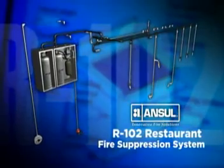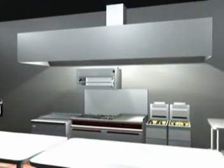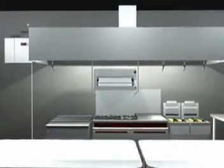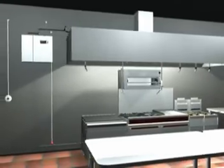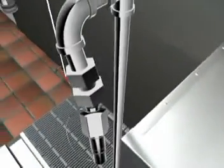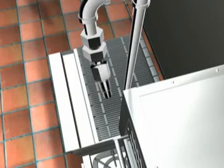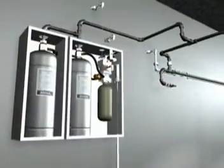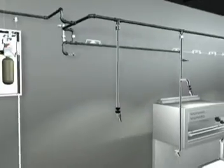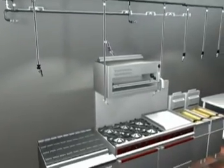The Ansel R102 Restaurant Fire Suppression System provides you with two design options. The primary is an appliance-specific design where nozzles are aimed at specific hazard areas of the appliance. This is considered the most economical design because the agent is aimed only where it is needed.